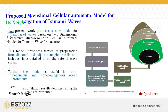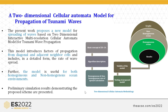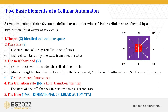The 2D cellular automata model for propagation of tsunami waves introduces the effect of propagation from diagonal and adjacent neighbour cells, including the detailed form of the rate of wave spread. The model is useful for both homogeneous and non-homogeneous ocean environments. The primary simulation results demonstrating the proposed scheme are presented, covering the basic concept of 2D cellular automata, algorithm description, homogeneous and non-homogeneous spread calculation, testing of the proposed model, and result graphs.